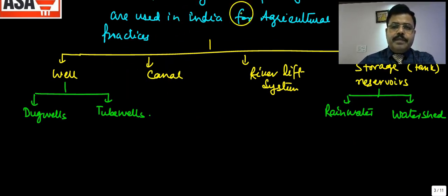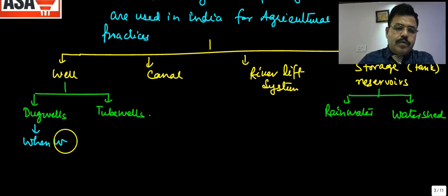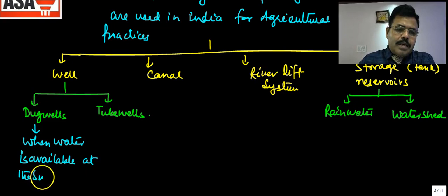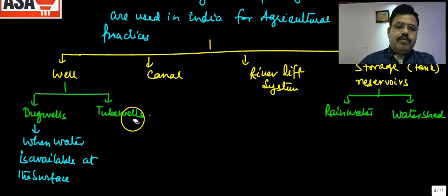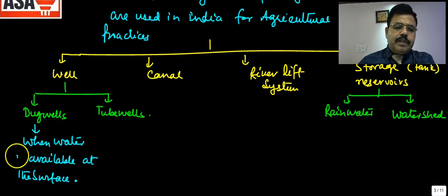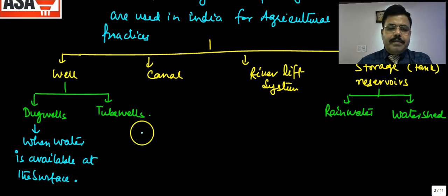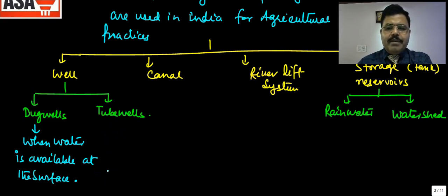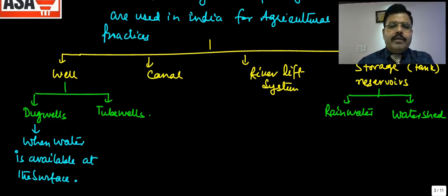Now we will discuss one by one. A dug well is when water is available at the surface strata — that is, at the surface water level deep in the ground. So a dug well is like this: where there is a deep surface and a stratum level of water, and you draw from that.